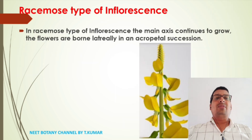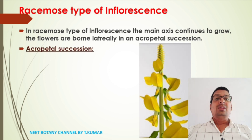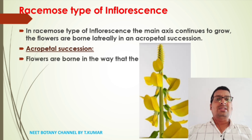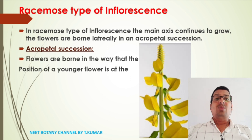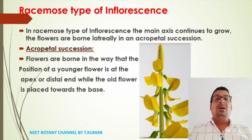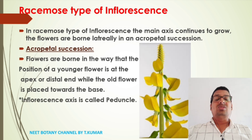In racemose type of inflorescence, the main axis continues to grow and the flowers are borne laterally in an acropetal succession. In acropetal succession, the younger flowers are positioned at the apex or distal end while the older flowers are placed towards the base.